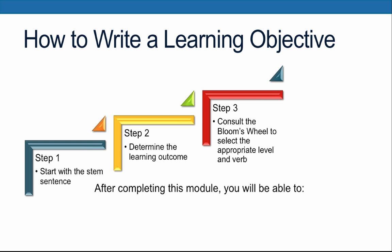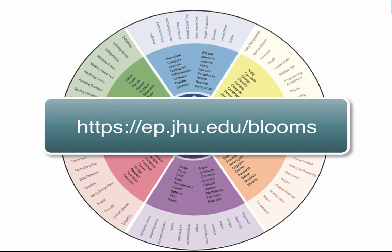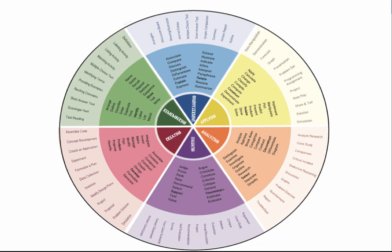From this point, we'll move on to step three: consult the Bloom's Wheel to determine the appropriate level of learning and select an appropriate verb that reflects exactly what you want the learners to do. The Bloom's Wheel is available online — simply point your browser to ep.jhu.edu/blooms and you'll be able to download a PDF of this tool.